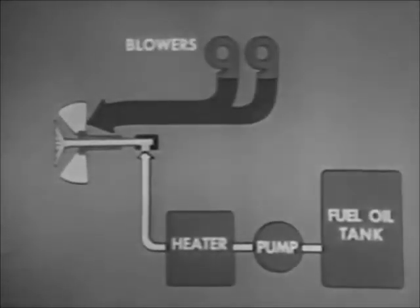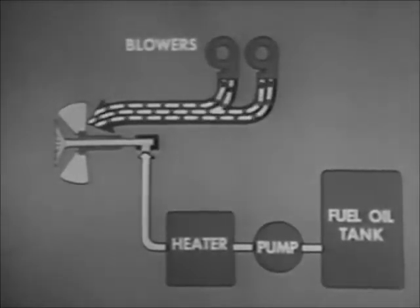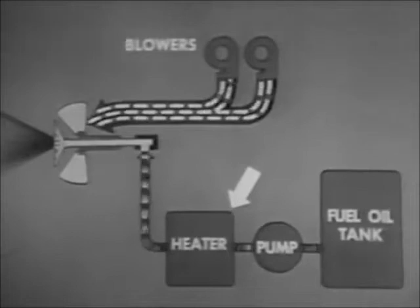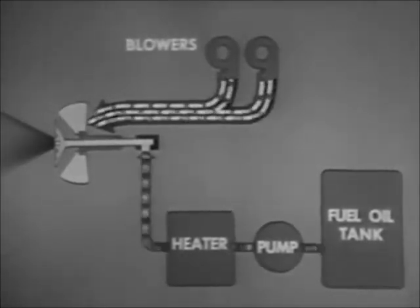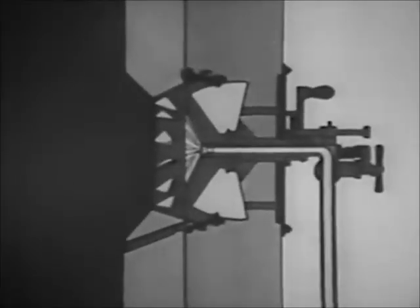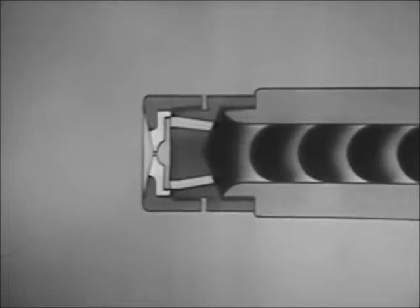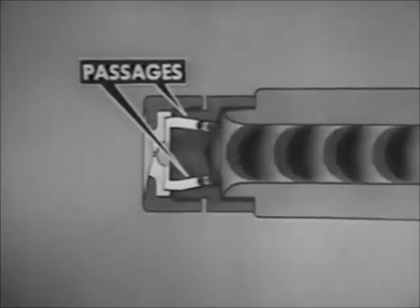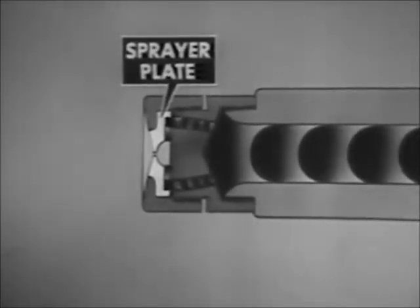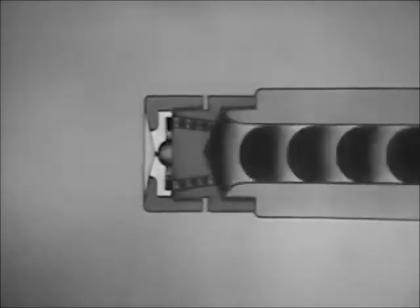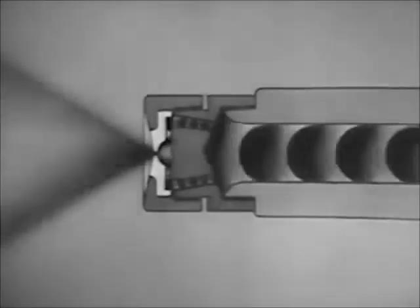The forced draft blowers send a strong blast of air to the burner. The fuel oil pump sends the oil through the heater where the oil is heated to give it good flow quality, then the oil is pumped to the burner. This simplified cutaway of the burner shows how the fuel oil is forced through the burner barrel to the atomizer nozzle, where a series of passages guide the oil to the sprayer plate. The sprayer plate makes the oil rotate at high speed, breaking it up into particles, and the oil leaves the atomizer as a hollow mist-like cone or spray.